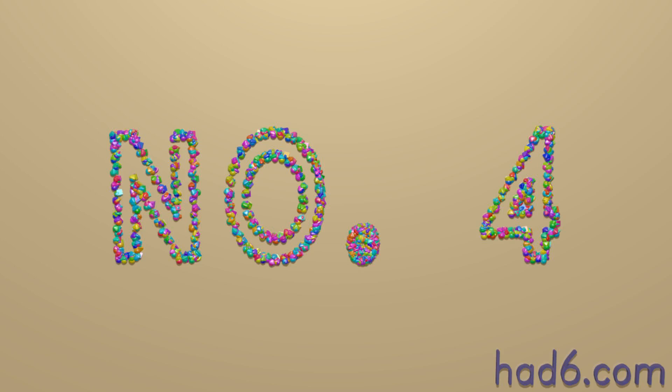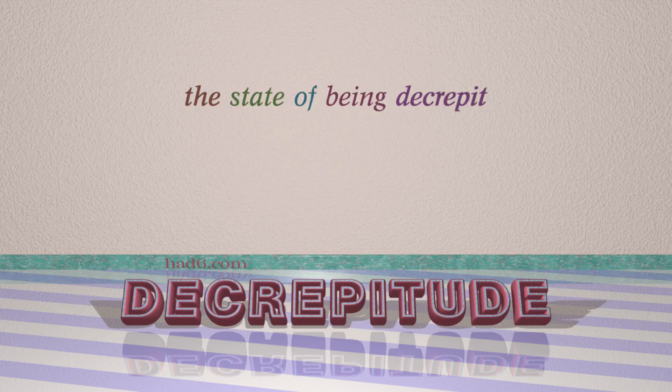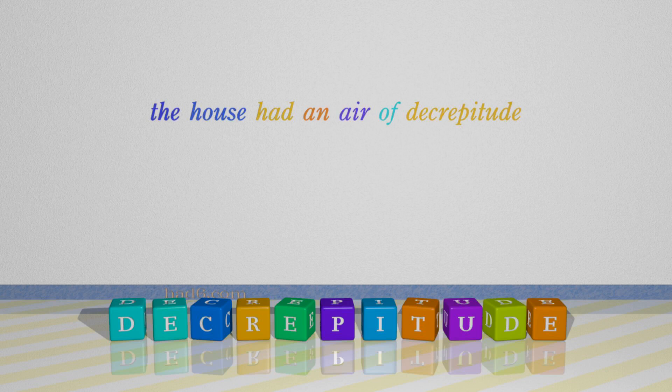Number 4: Decrepitude. Which means the state of being decrepit. For example: the house had an air of decrepitude.